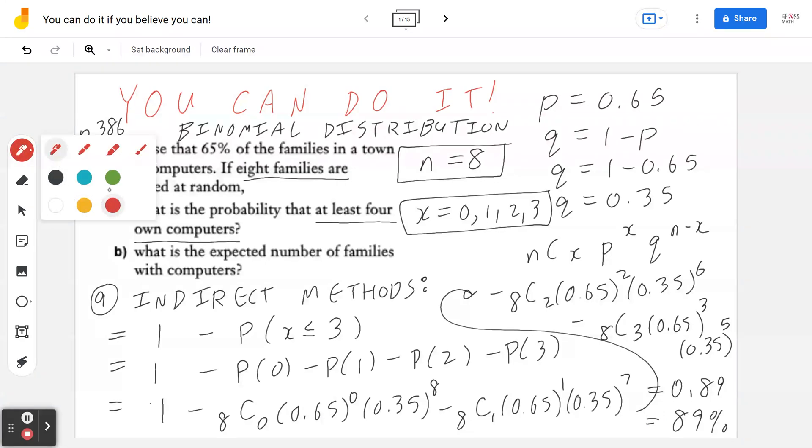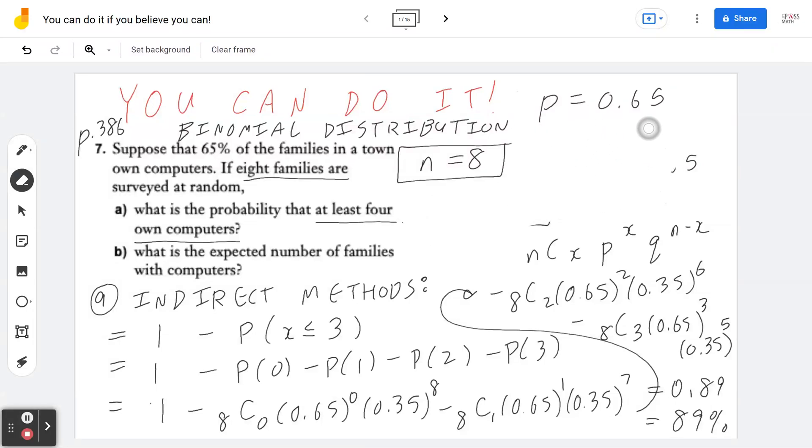Now for your reference, I'm going to switch colors for part B. What is the expected number of families with computers? So I'm going to erase some of this in the corner here. So I can fit part B in for you right here. For part B, you're thinking about the expected value.